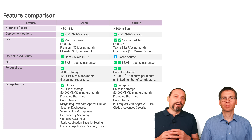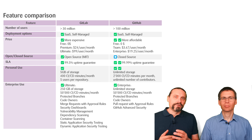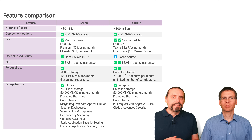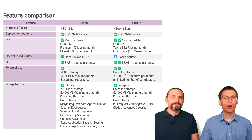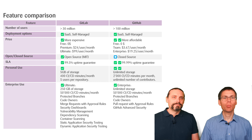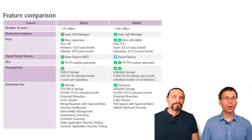GitLab Ultimate offers a huge feature list for DevSecOps pipelines, including protected branches, code owners, merge requests with approval rules, security dashboards, vulnerability management, dependency scanning, container scanning, static application security testing, and dynamic application security testing. The GitHub Enterprise license also offers unlimited storage and 50,000 CI/CD minutes per month, with DevSecOps-relevant features including protected branches, code owners, pull requests with approval rules, and what they call GitHub Advanced Security.